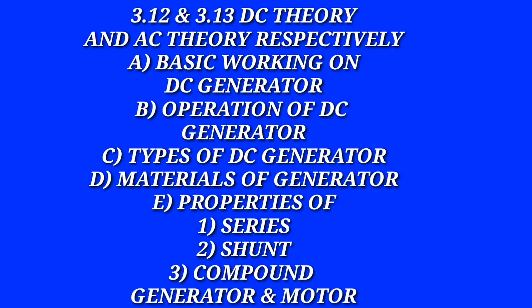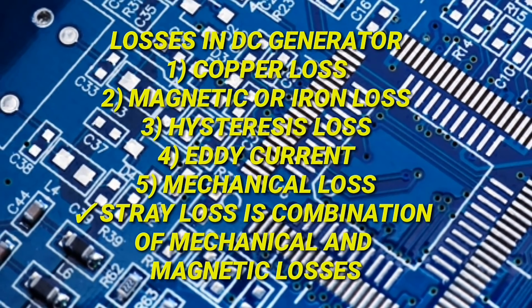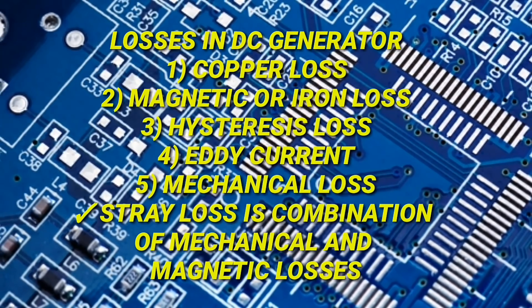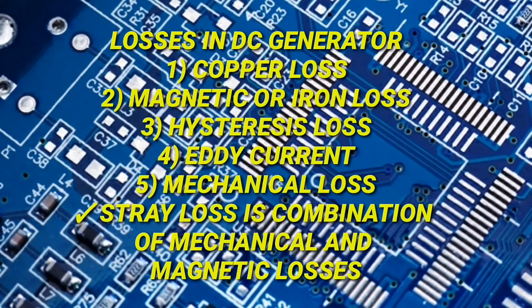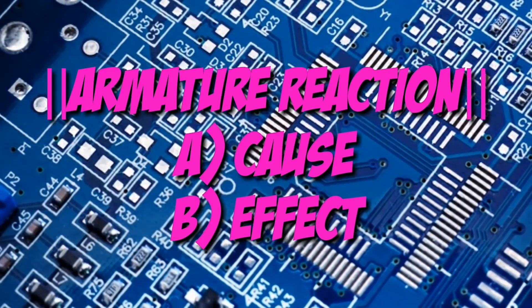Moving on to 3.12 and 3.13, which is about DC theory and AC theory. This topic is really important in order to understand the generator and motor. From DC theory, we have the basic working of generator and motor, the construction and purpose of different components in a DC generator. Remember the operation of different types of DC generators, and also the material of different parts such as the riser, which is made of copper. Remember the properties and operation of series, shunt and compound generators and motors. One of the most important topics is the losses in a DC generator, which includes copper loss, magnetic or iron loss, stray loss, and eddy current loss. There are also some mechanical losses. Remember that stray loss is the combination of both mechanical and magnetic loss. The armature reaction is one of the important topics — remember its causes and effects — and it is a favorite topic for DGCA.